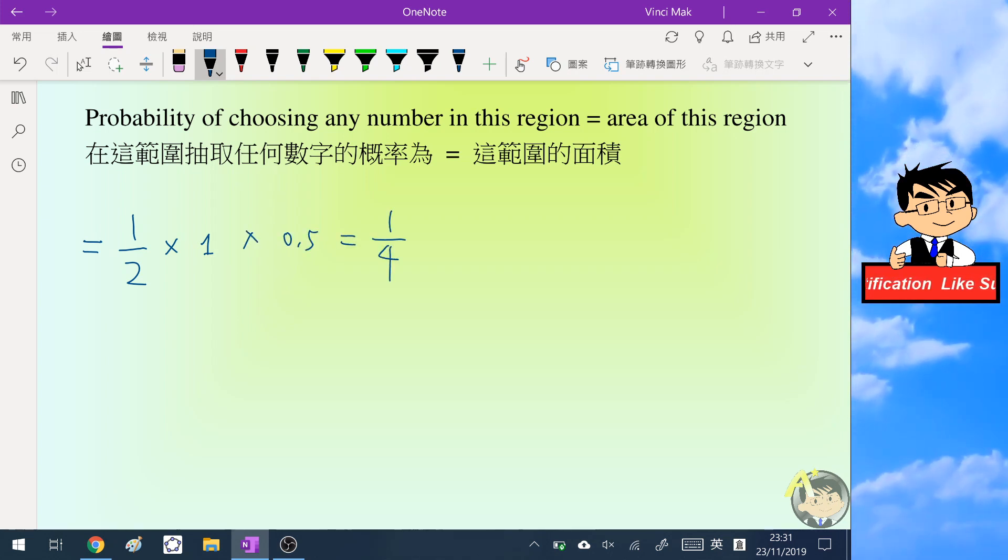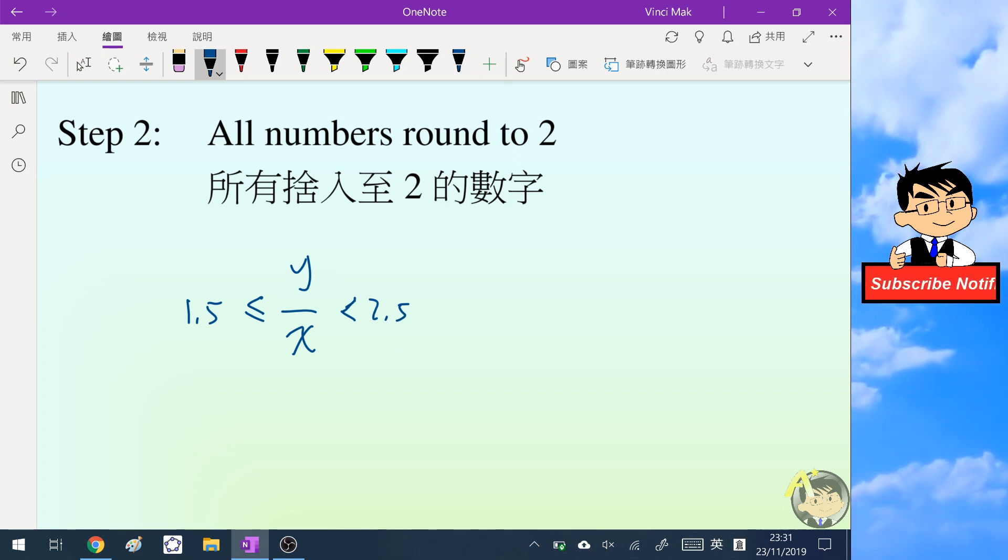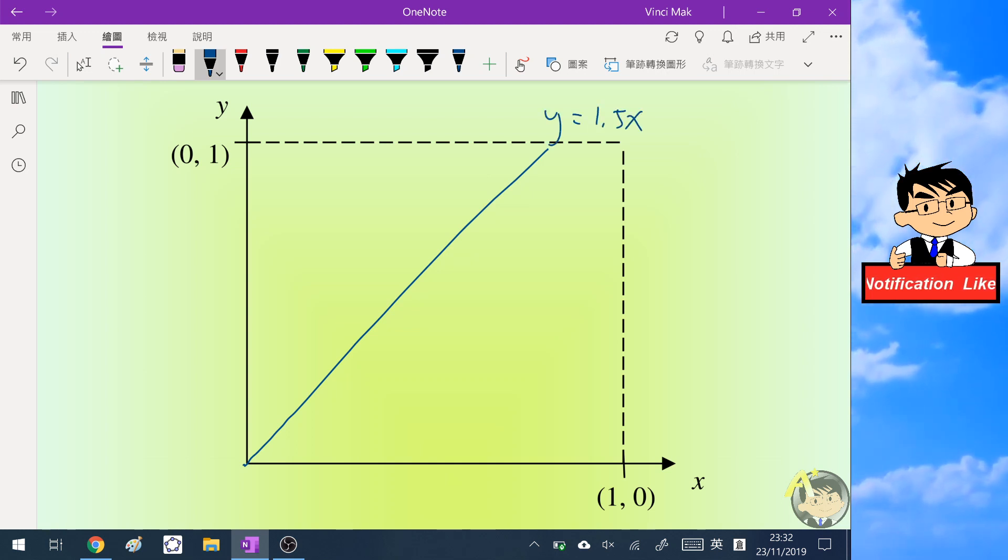The next step: we will consider all numbers that round to two. If we want a number to be rounded to two, we need it to be within 1.5 and 2.5, and then we multiply all sides by x. So we get an inequality like this, and this inequality also represents a region between the line y equals 1.5x and another line y equals 2.5x. So we need to find the area of this region.